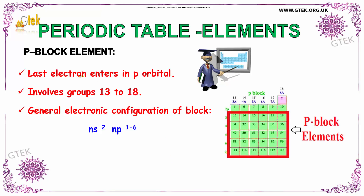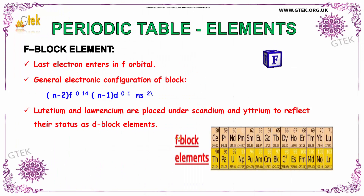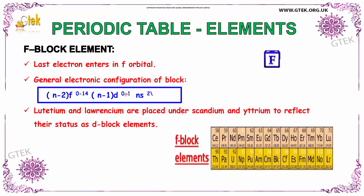For P block, the last electron enters in the P orbital. It involves groups from 13 to 18. The general electronic configuration is (n−2)f⁰⁻¹⁴ (n−1)d⁰⁻¹ ns². Lutetium and Lawrencium are placed under scandium and yttrium to reflect their status as D block elements.